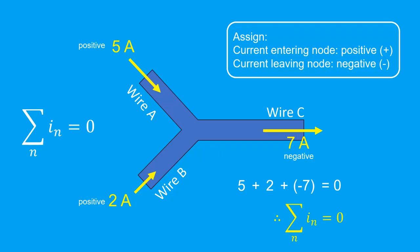This is just a rearrangement of saying that the current entering the node must equal the currents leaving the node, which is an interpretation I will use more often to solve problems.